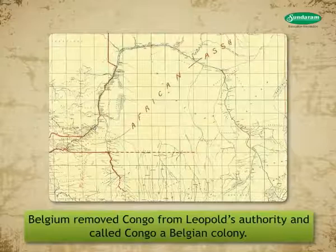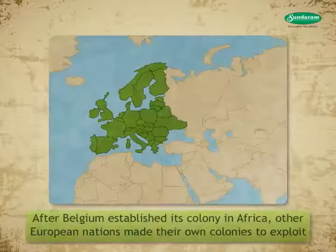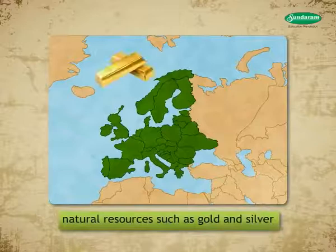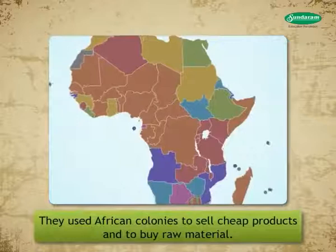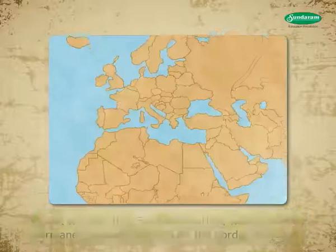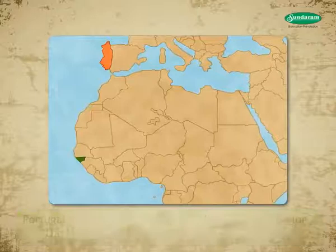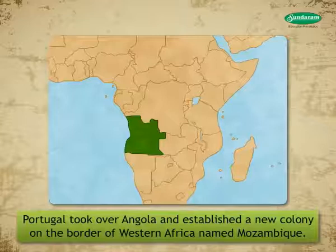After Belgium established its colony in Africa, other European nations made their own colonies to exploit natural resources such as gold and silver. They used African colonies to sell cheap products and to buy raw material. Portugal was the first European nation which founded a permanent colony in Africa on the border of Ghana.